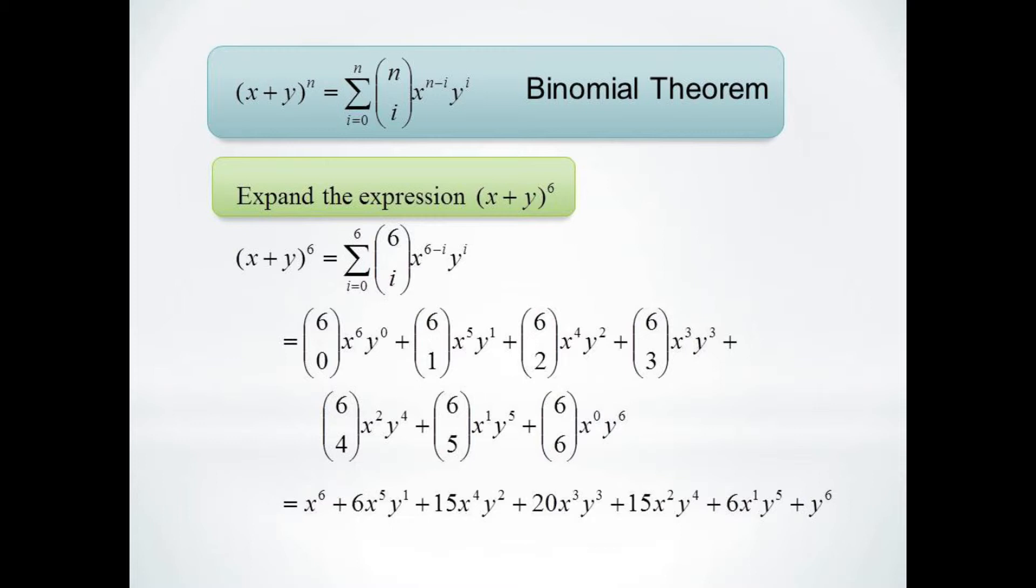For the second term, 6 choose 1, we have y to the first power and x to the 6 minus 1 equals the fifth power. And so on up to 6 choose 6 which gives us y to the 6 power and x to the 0.